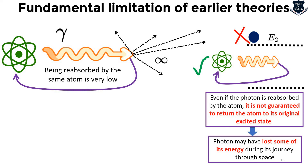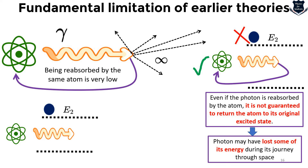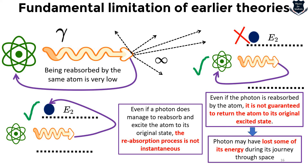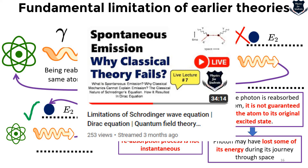Even if the photon is reabsorbed, it's not guaranteed the atom returns to its original state — going from E2 back to E1 is possible, but full restoration may not occur. A photon may have lost some energy, just as we get tired after a long walk. Even if a photon does manage to get absorbed by the excited atom hypothetically, the reabsorption process is not instantaneous. So the limitation in classical theory is essentially the unpredictability of spontaneous emission, which cannot be handled through Schrödinger's equation.